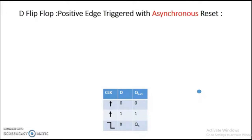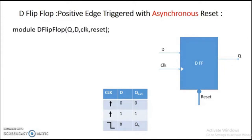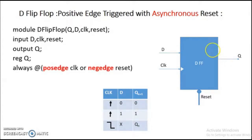We are designing the D flip-flop which is positive edge triggered with an asynchronous reset. The block diagram shows three inputs: D, clock, and clear. It is a positive edge triggered D flip-flop and the reset signal is an active-low signal. The input ports are D, clock, and reset; the output port is Q. In behavioral modeling, the output variable must be declared as a register type. In the sensitivity list of the always block, we pass two signals: the clock signal and the reset signal for asynchronous reset.